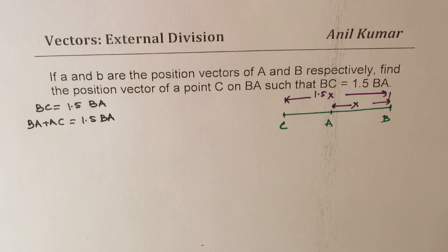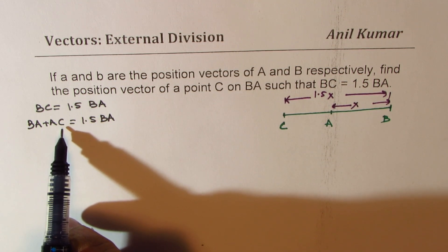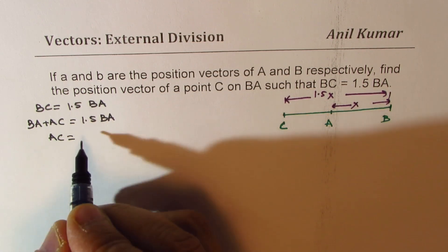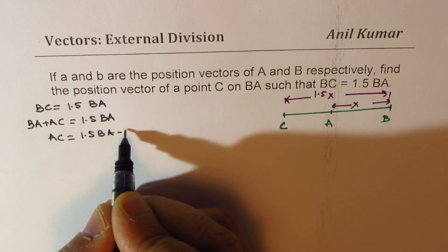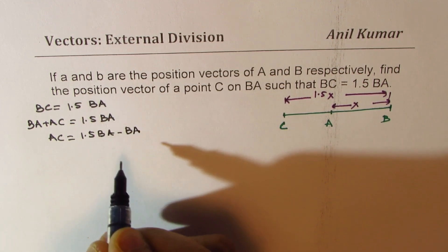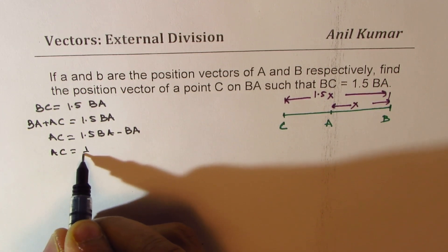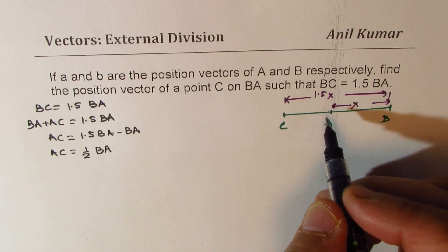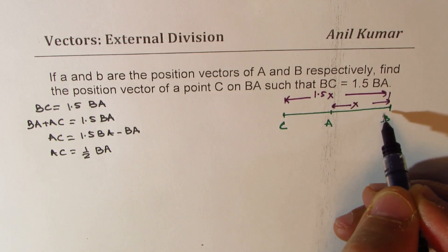So now we could write what AC is. So AC will be 1.5 times BA minus BA, which means that AC is half of BA.